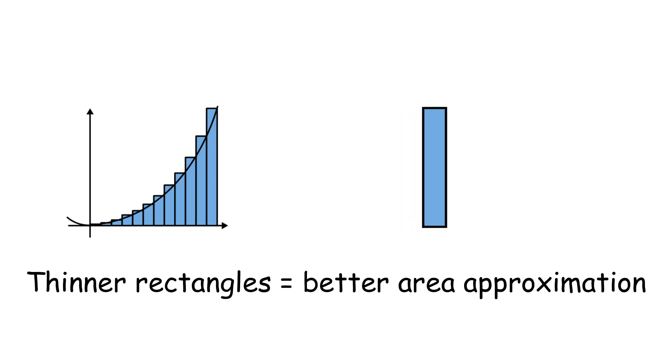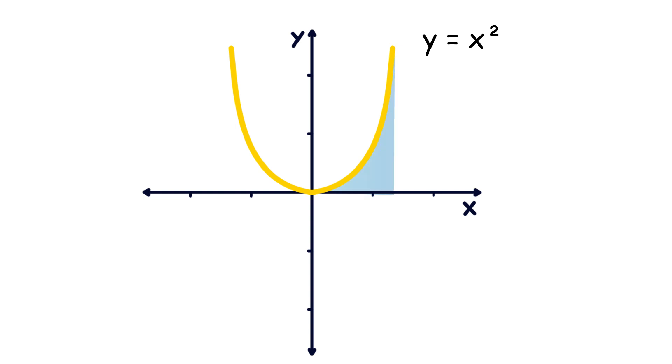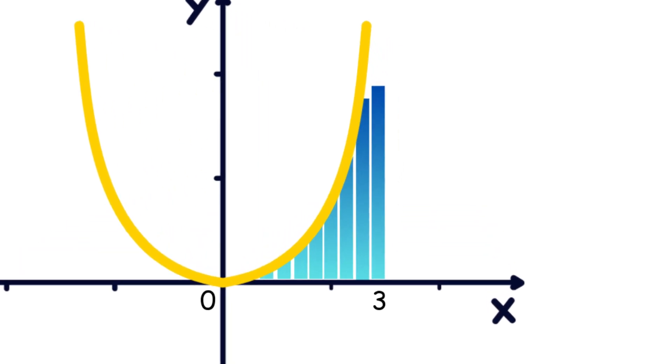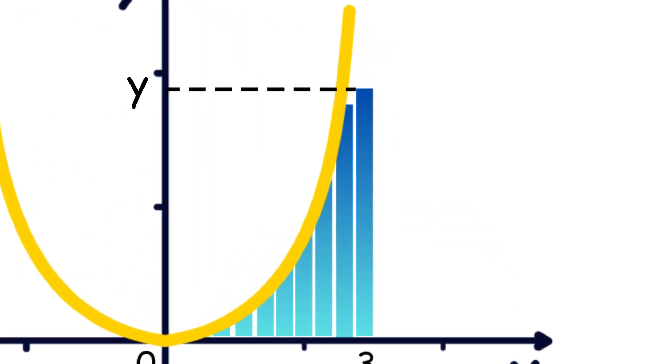Imagine each rectangle is very thin. The thinner they are, the better the estimate of the area. For example, let's approximate the area under y equals x power 2 from x equals 0 to x equals 3 using rectangles of width 0.3 units. That gives us 10 rectangles. Each rectangle's height is the y value at that x, which is x power 2.